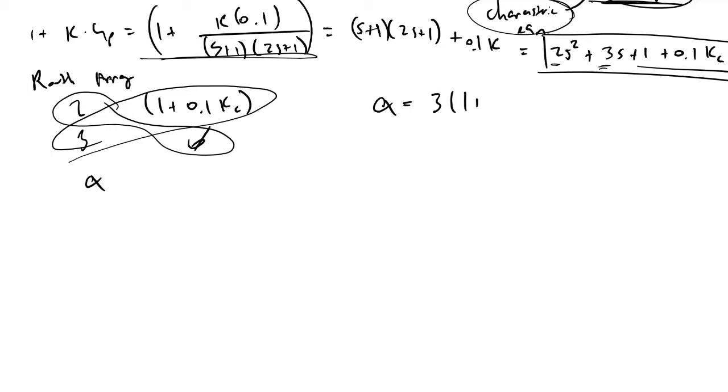If we determine what alpha is, alpha will be the cross product of this. So we'll have 3 times (1 plus 0.1 times KC), and we're going to be subtracting it from the other cross product, which would be 2 times 0, which is 0. We're going to be dividing this by specifically our bottom left element, which is 3. So alpha right here is equivalent to 1 plus 0.1 KC. I'll just plug that in directly right here: 1 plus 0.1 KC.